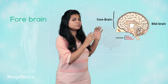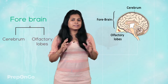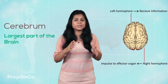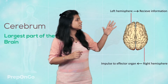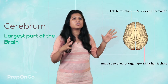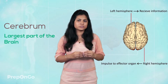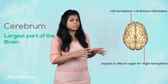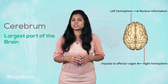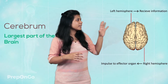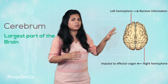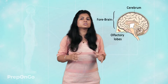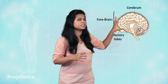The forebrain has two parts: the cerebrum and olfactory lobes. The cerebrum is the largest part of the brain and has been divided into two hemispheres. The first hemisphere is responsible for taking all the impulses received from the sensory organs — like touching, smelling, and so on — and is also responsible for giving us the sensation of being full after eating. The second hemisphere involves the effector of the impulse, where decisions are mainly made. So the forebrain is the main decision-making part of the brain.